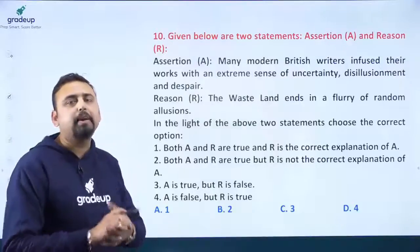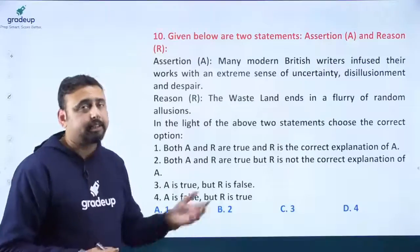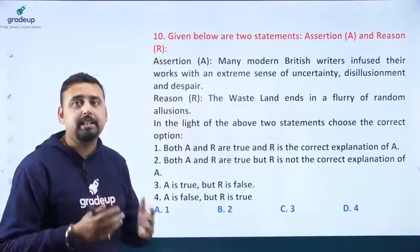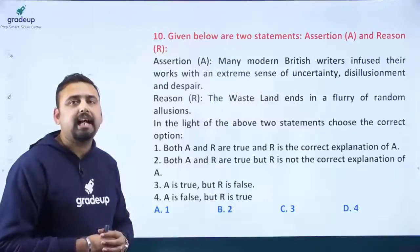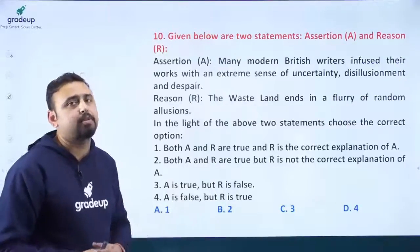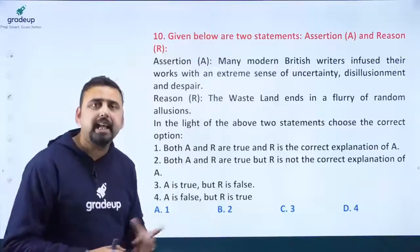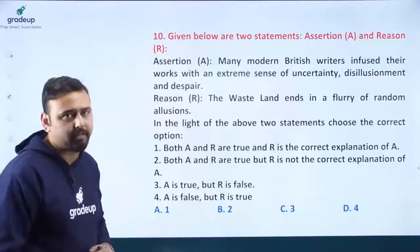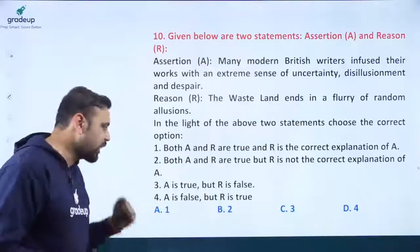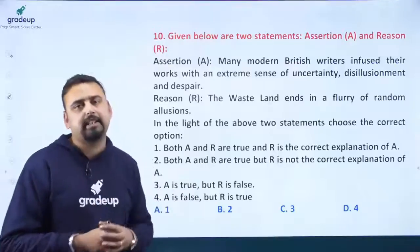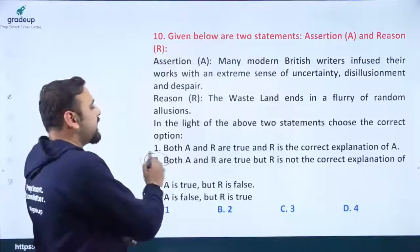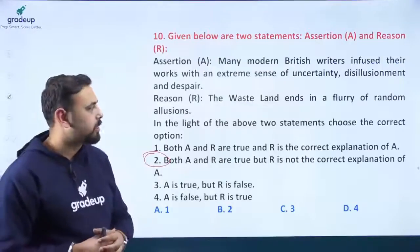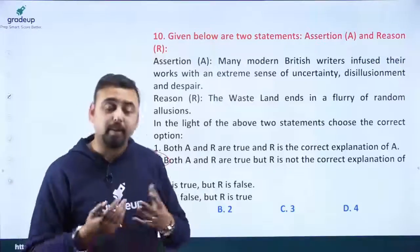The last question: given below are two statements — Assertion and Reason. Assertion: many modern British writers infuse their works with an extreme sense of uncertainty, disillusionment, and despair. Reason: The Waste Land ends in a flurry of random allusions. Choose the correct option. The answer is: both A and R are true, but R is not the correct explanation of A.